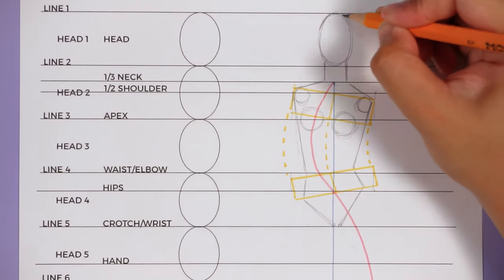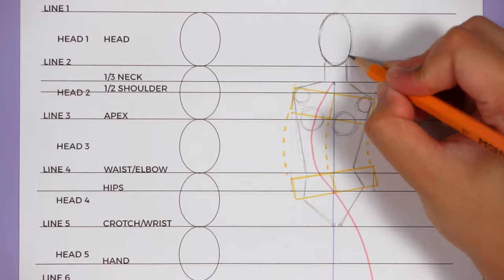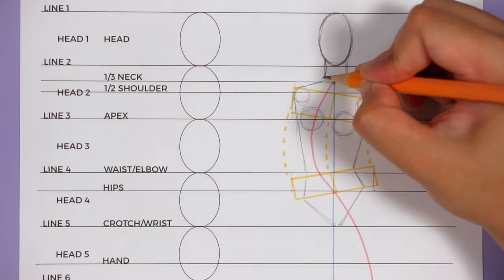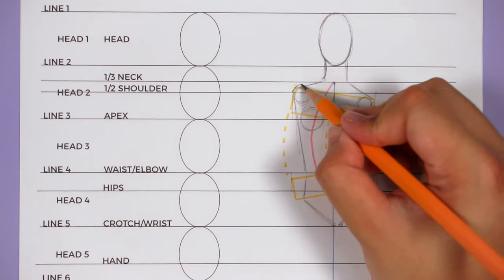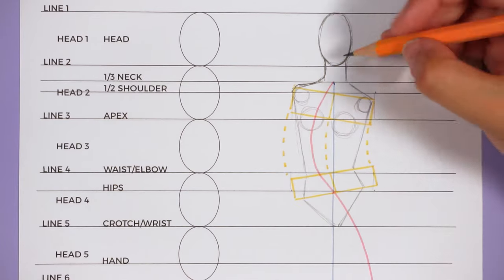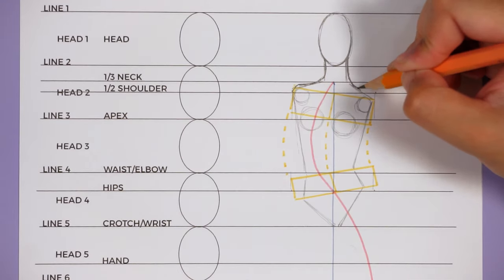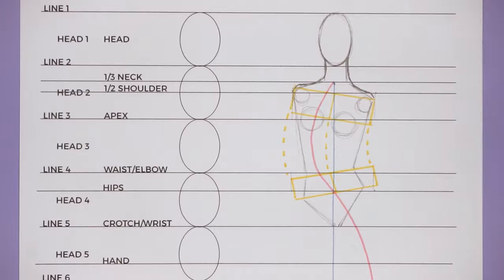For example, the waist is generally smaller than the shoulders or the hips. So I make sure that when I'm connecting the shoulder line down to the hip line, it goes inwards to kind of show or try and define that area.